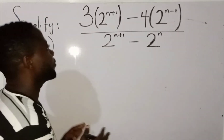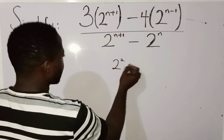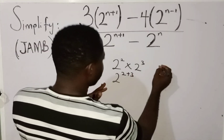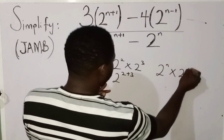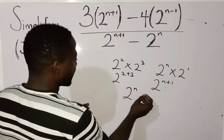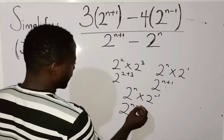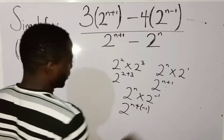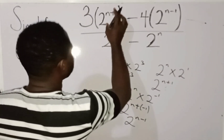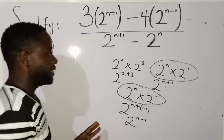Now, looking at this question, the first thing you have to do is to expand. But before I expand, let me quickly remind us that in indices, if you have 2 raised to power 2 times 2 raised to power 3, it simply means 2 raised to power 2 plus 3. So if you have 2 raised to power n multiplied by 2 raised to power 1, it simply means 2 raised to power n plus 1. And also if it is 2 raised to power n times 2 raised to power minus 1, you get 2 raised to power n minus 1. So that is what you have to know first.